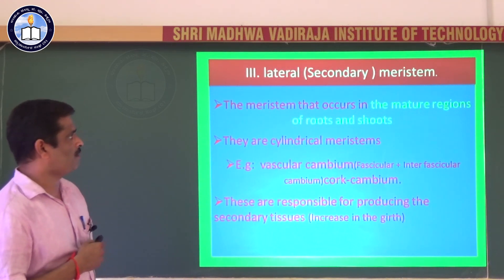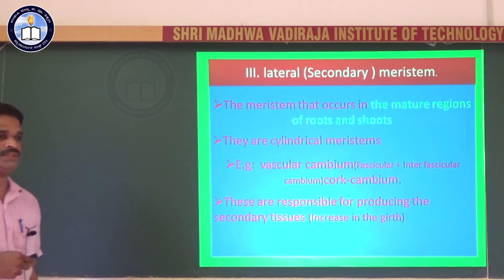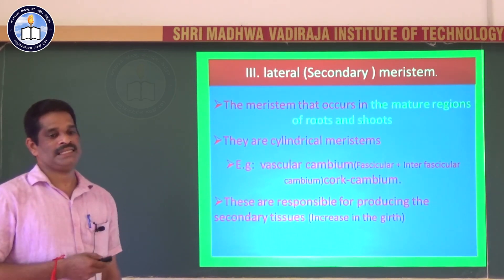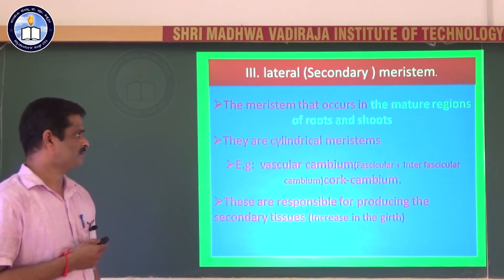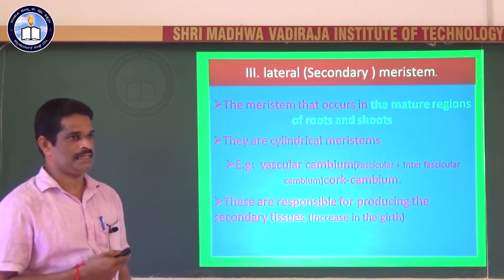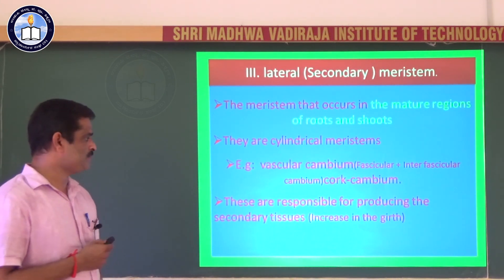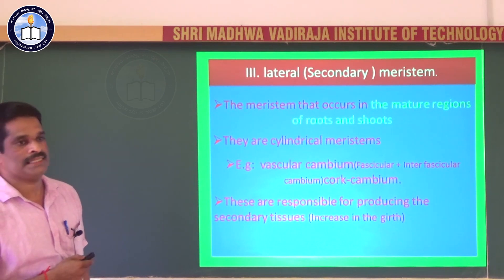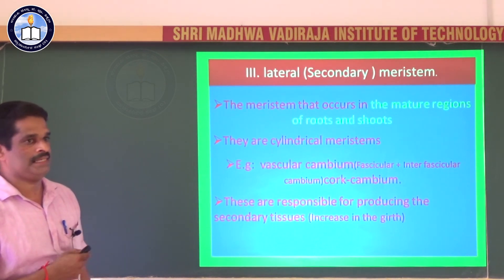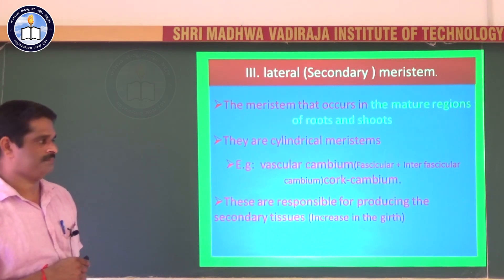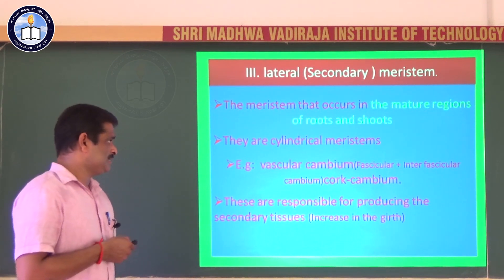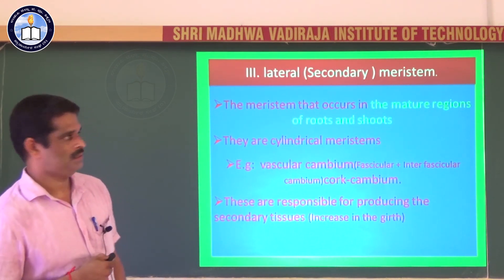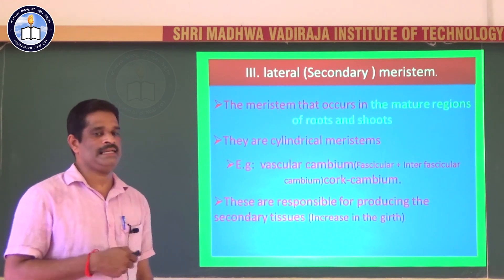The lateral meristem is the meristem that occurs in the mature regions of the root and shoot. It is also called cylindrical meristem. The lateral meristem is responsible for producing the secondary tissues, which are responsible for increasing the thickness or girth of the plant — that is secondary growth. Examples of lateral meristem are vascular cambium and cork cambium. Lateral meristem is also called secondary meristem.